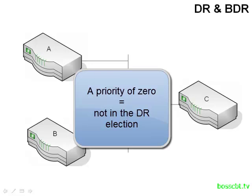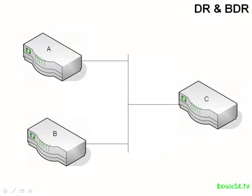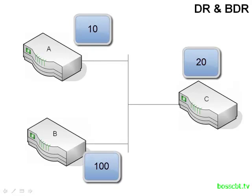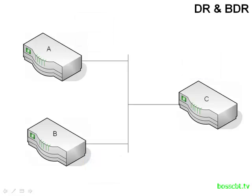If you don't want a particular router to have a chance to become a designated router or even participate in the election, you can give it a priority of zero. That way it has no chance of becoming either a designated or a backup designated router. Each router has a priority value, and here router B was our elected designated router because it has the highest router priority — so A becomes adjacent to router B, and C becomes adjacent to router B as well.